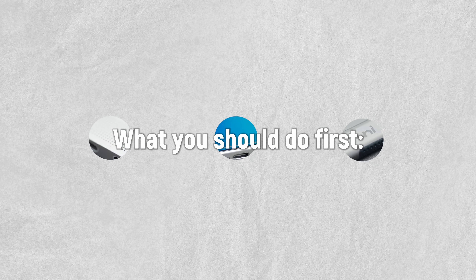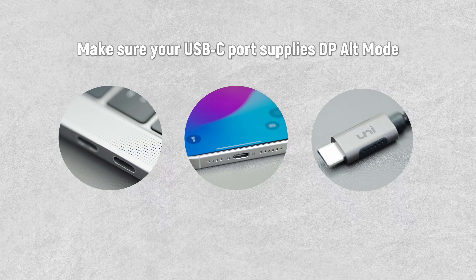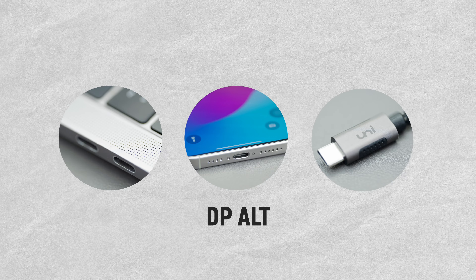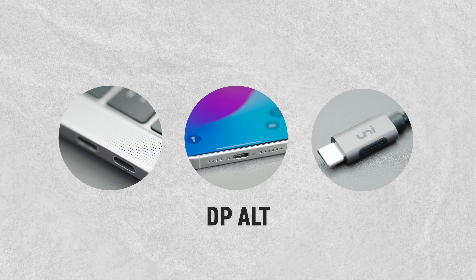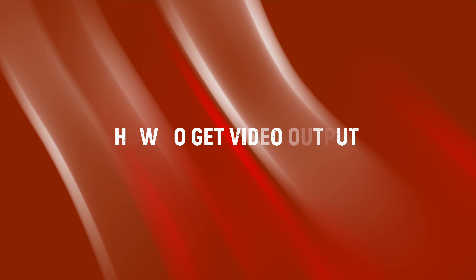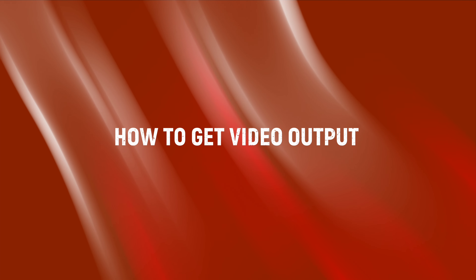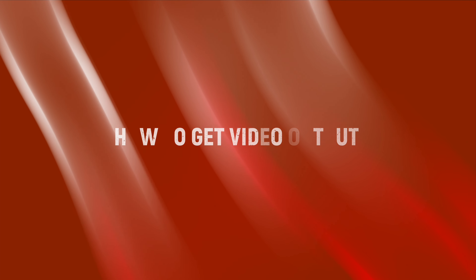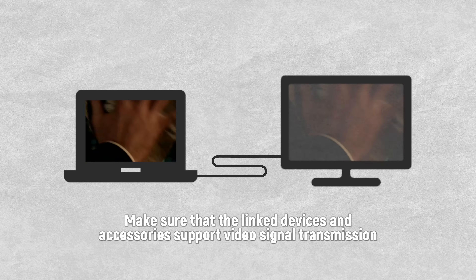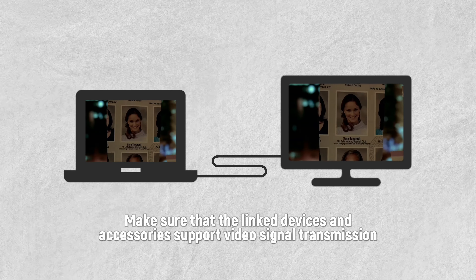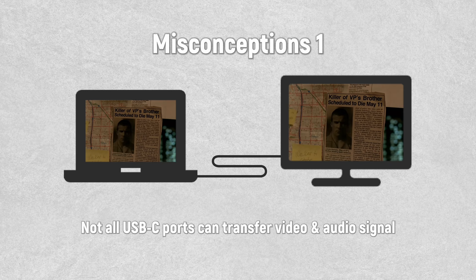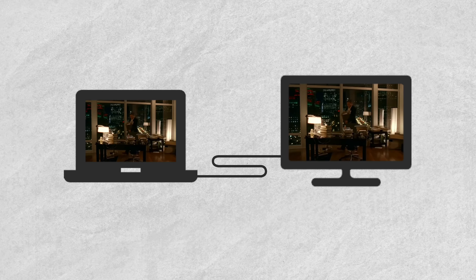What you should do first: make sure your USB-C port supplies DP-OUT mode. To get video output, you need to make sure that the linked devices and accessories support video signal transmission. Not all USB-C ports can transfer video and audio signal.